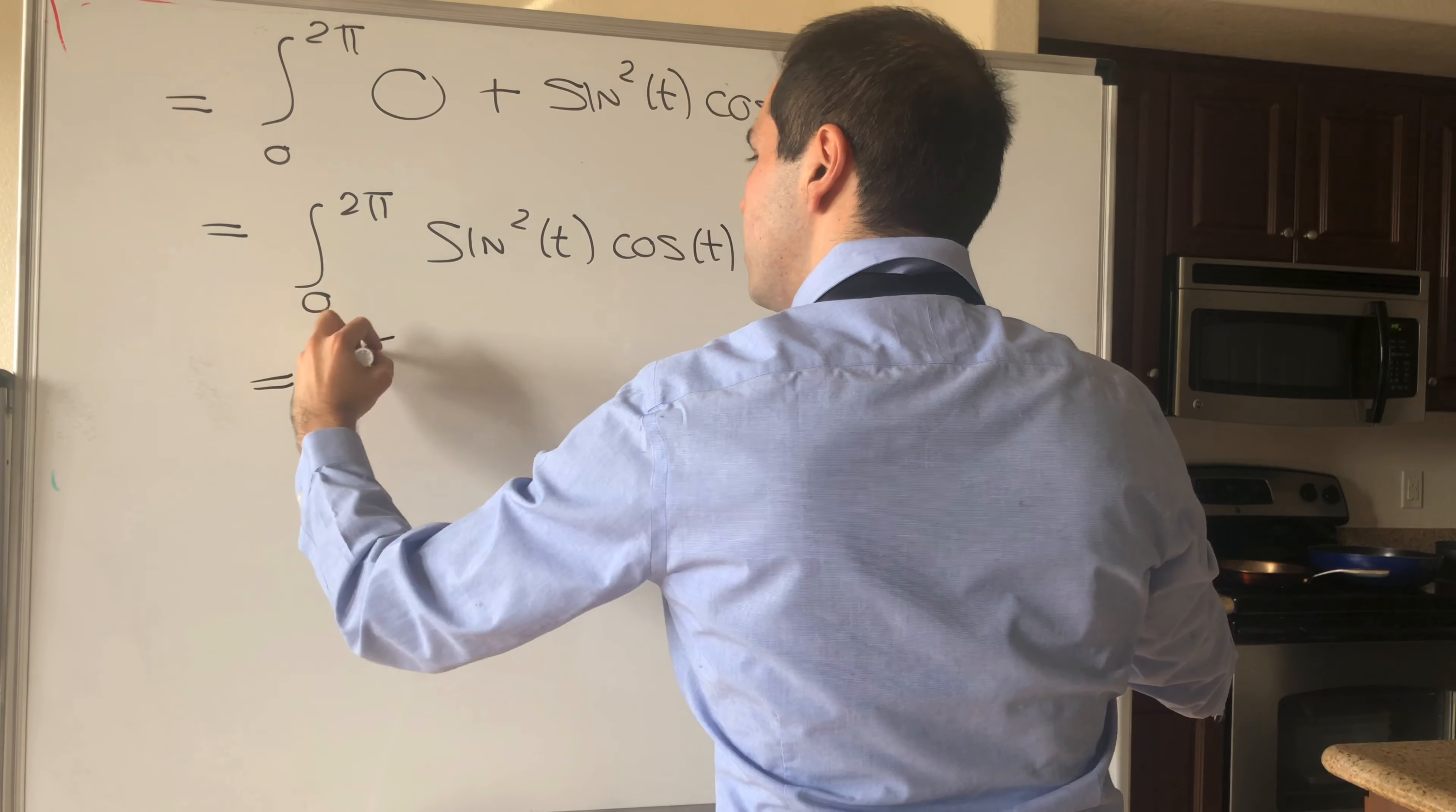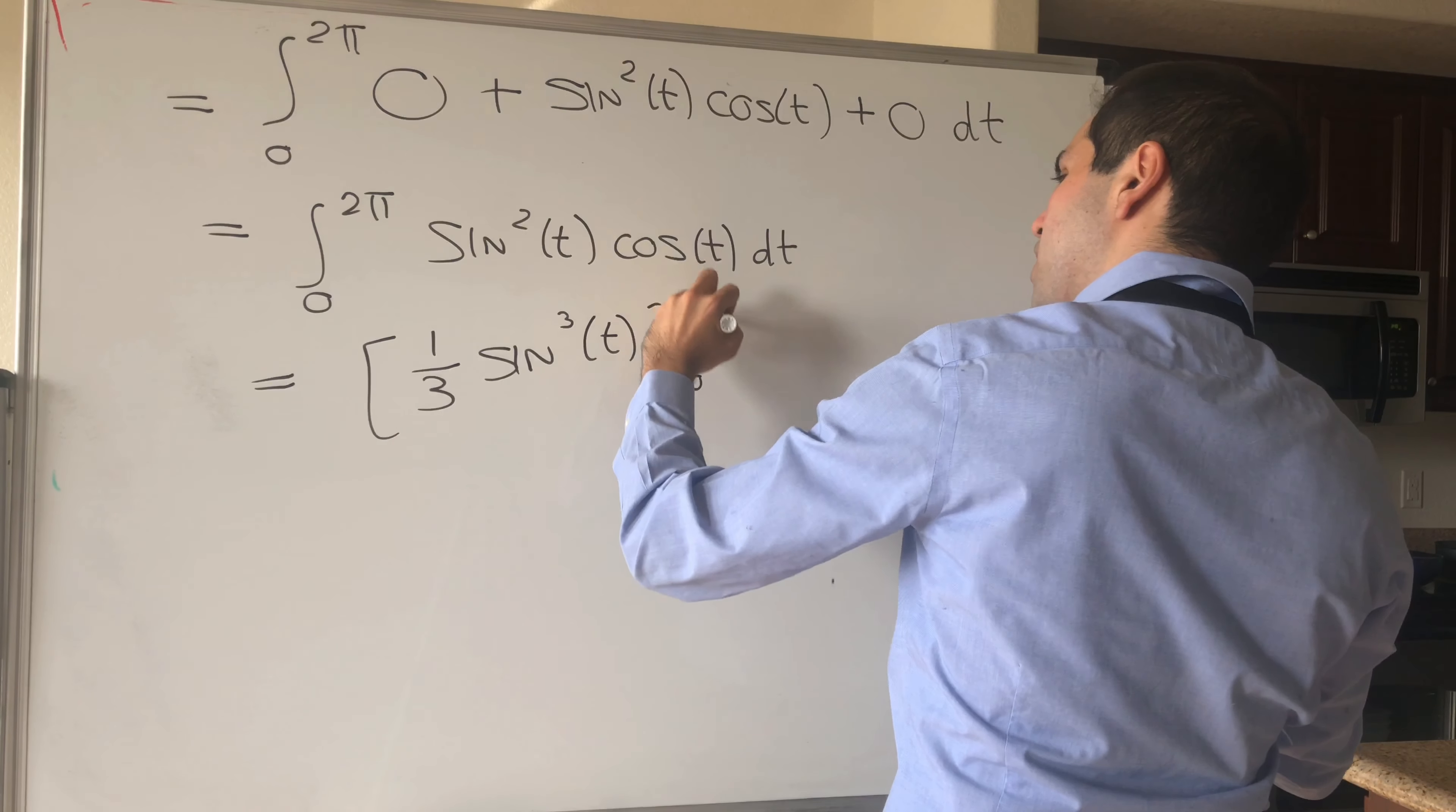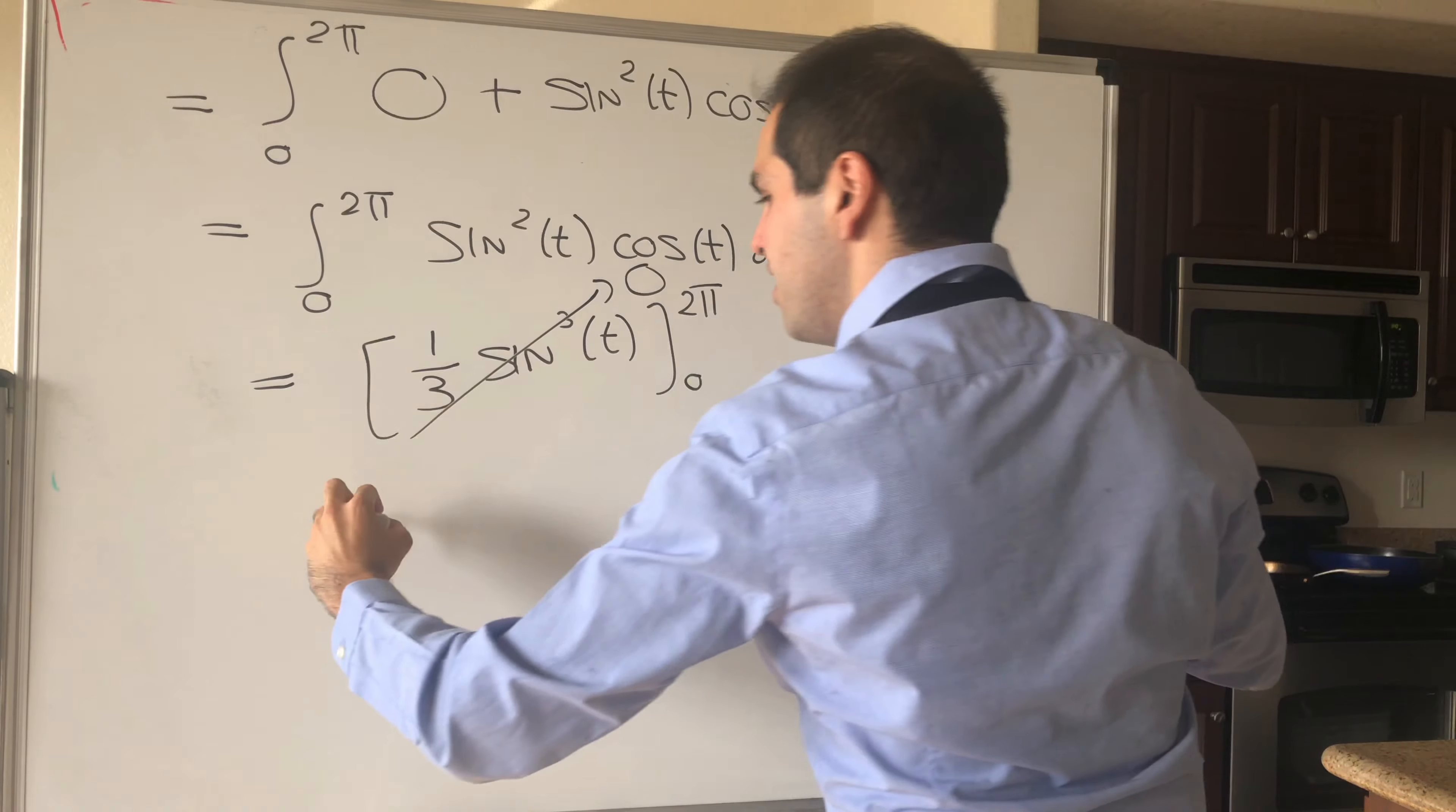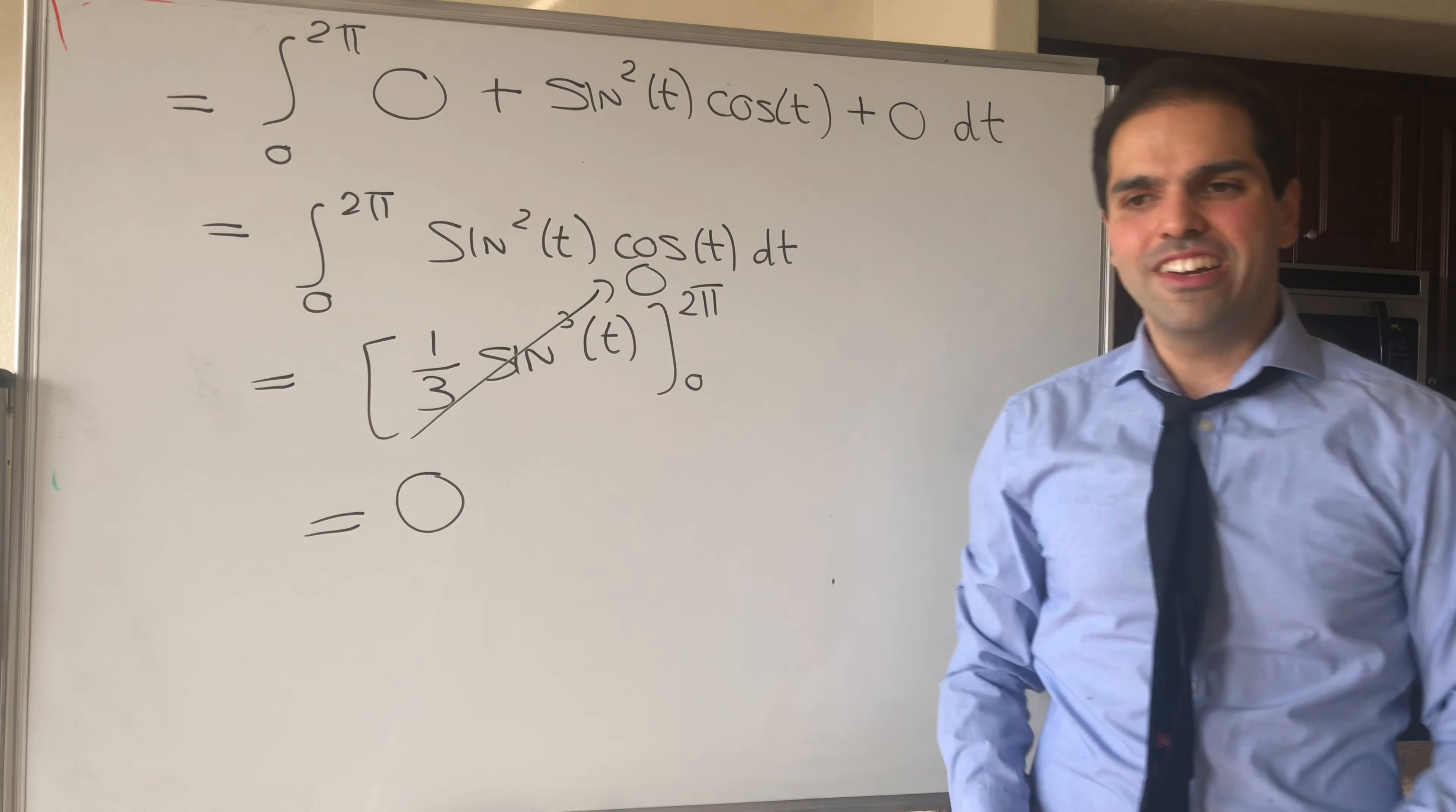And an antiderivative shows one-third sine cubed of t, from 0 to 2 pi. But if you evaluate this both at 0 and 2 pi, you get 0. So, in the end, the value of the surface integral of the curl is simply 0, which is very neat.